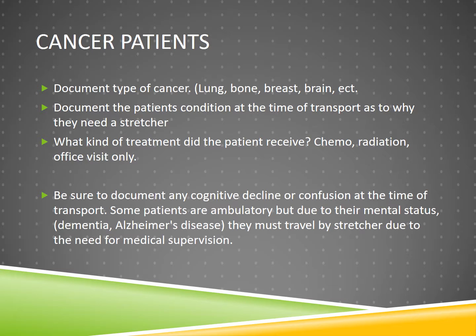Be sure to document any cognitive decline or confusion. A patient may be ambulatory but require a stretcher due to confusion — due to the confusion, they need some medical supervision. Also document at least three histories on the run sheet for billing purposes.